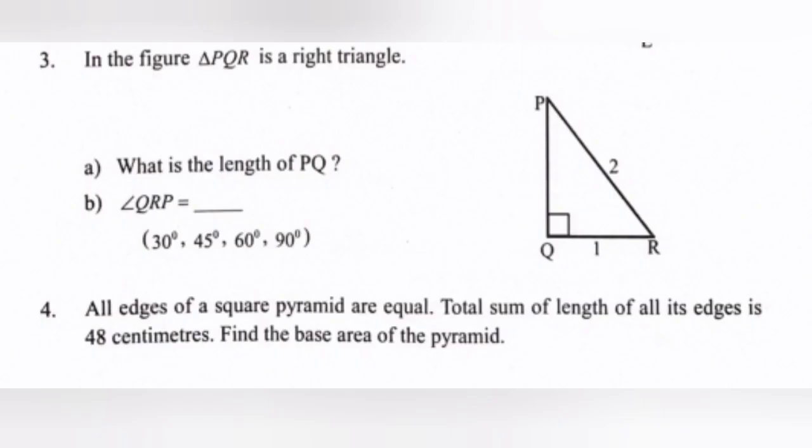Question 3: In the figure, triangle PQR is a right triangle. Part a: What is the length of PQ? Answer: PQ is equal to root 3. Part b: Angle QRP is equal to — 30 degrees, 45 degrees, 60 degrees, or 90 degrees? Answer: 60 degrees.